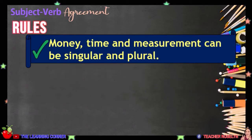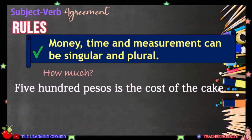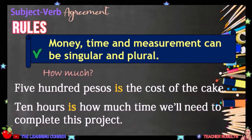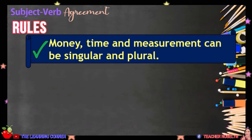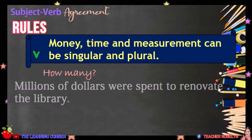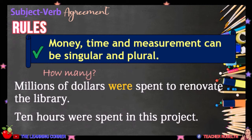Money, time, and measurement can be singular and plural. If you can answer the question 'how much,' the subject is considered singular. For example, five hundred pesos is the cost of the cake. Ten hours is how much time we'll need to complete this project. If the subject answers the question 'how many,' it is considered plural. For example, millions of dollars were spent to renovate the library — how many dollars were spent? Millions of them. Ten hours were spent in this project — how many hours were spent? Ten hours.